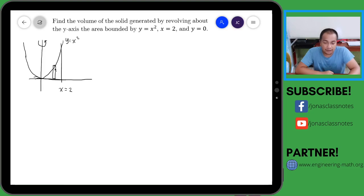Okay, dito sa point na to, the center of the rectangular element, that is actually the y equals x squared. kung point na to, this is actually the radius of rotation. This is the radius of rotation, okay. In this case, this is x. That is x because yan yung function natin y equals x squared.